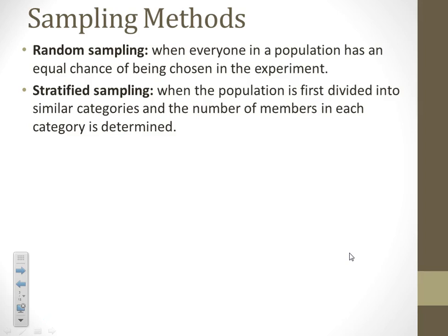Stratified sampling is a special type mentioned specifically in the standards, so you need to make sure you understand it. The population is divided into categories — for example, males and females, or within a high school: 9th, 10th, 11th, and 12th graders. Then we decide we want 50 9th graders, 50 10th graders, 50 11th graders, and 50 seniors, just to make sure every category is represented. That's the purpose of stratified sampling.